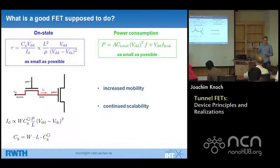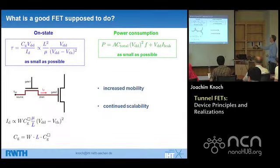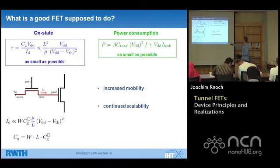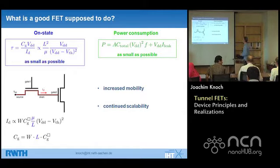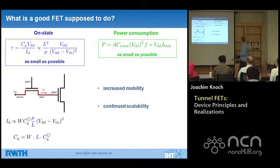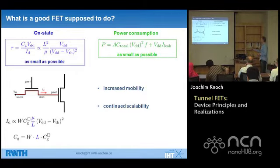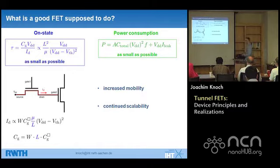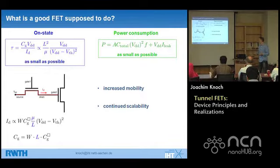I've put down two points here that are very important. The first one is obvious: you want to have on-state performance that is as good as possible, and an appropriate figure of merit would be the CV/I measure. Using almost textbook equations, when you want to improve on-state performance, you can go to materials that have higher carrier mobility and scale down the devices further. These are two knobs to turn to increase performance.